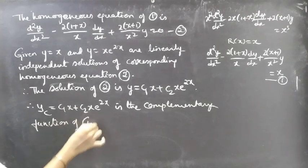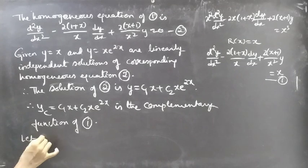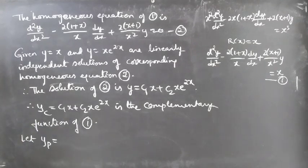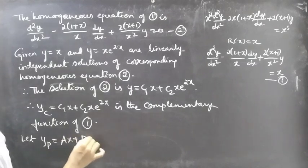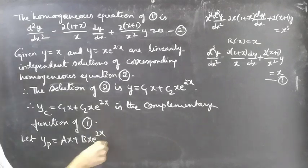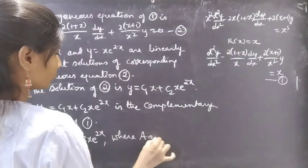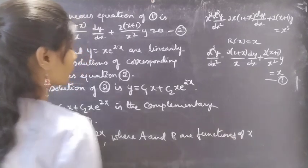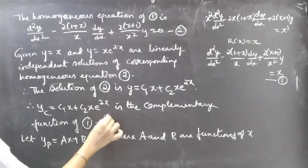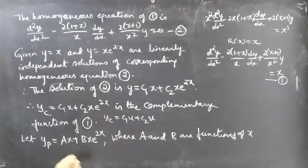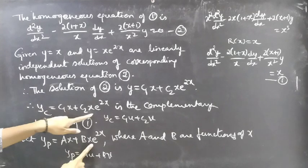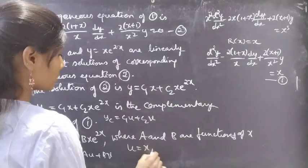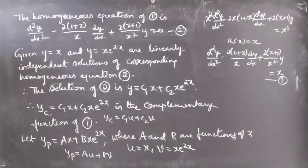Let yp be formed by replacing the arbitrary constants c₁ and c₂ by functions of x, namely a and b. Then yp = ax + b·xe^(2x), where a and b are functions of x. Comparing with a·u + b·v, we identify u = x and v = xe^(2x).